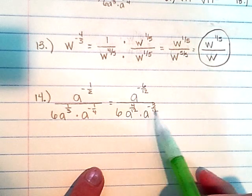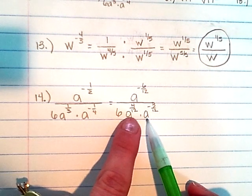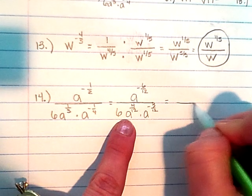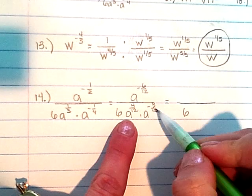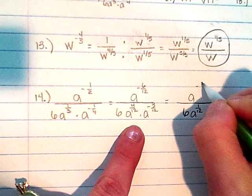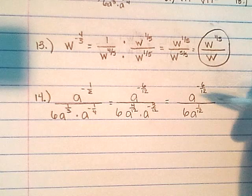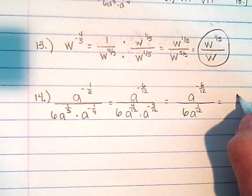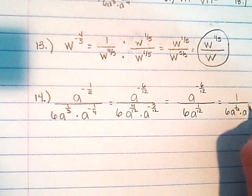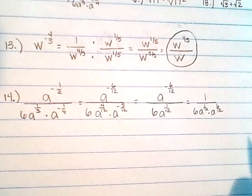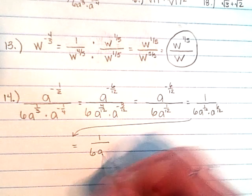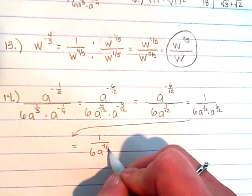Now I can go ahead and simplify the denominator first. Since this is multiplication, I repeat the base and add those exponents. That 6 stays put, and 4-twelfths plus negative 3-twelfths gives me positive 1-twelfth. I still have that negative exponent on the numerator to take care of — since it's negative, it gets moved to the bottom. So I now have 1 over 6a to the 1-twelfth times a to the 6-twelfths, which gives me 1 over 6a to the 7-twelfths power.